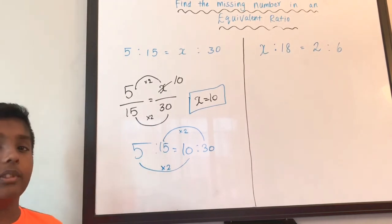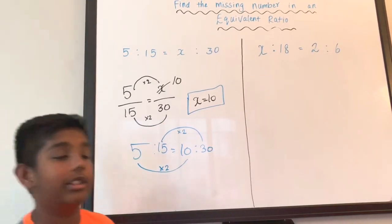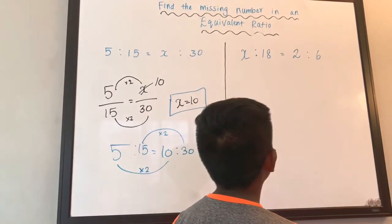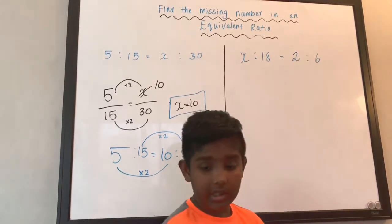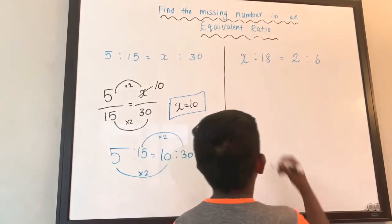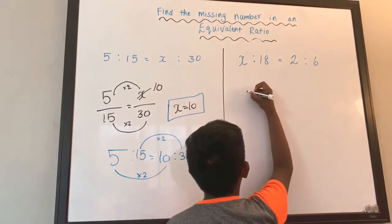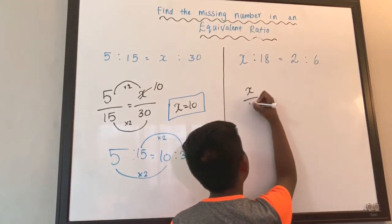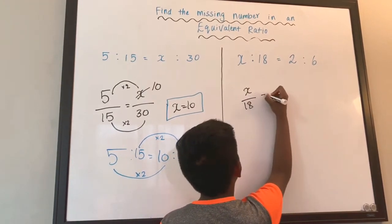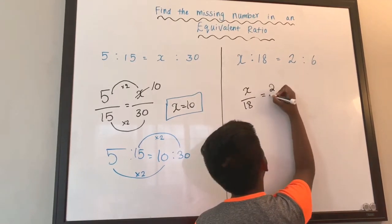So now let's move on. Next question. X is to 18 equals to 2 is to 6. First, let's write it in fraction. So it's gonna be X over 18 equals to 2 over 6.